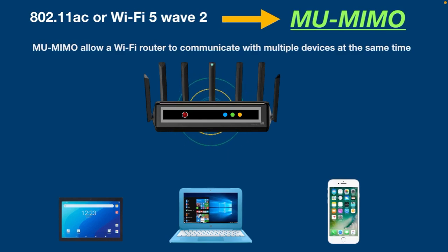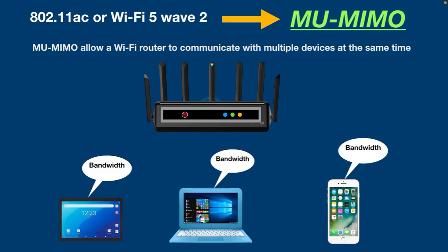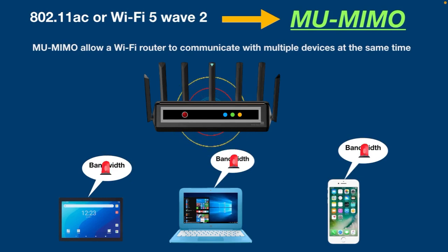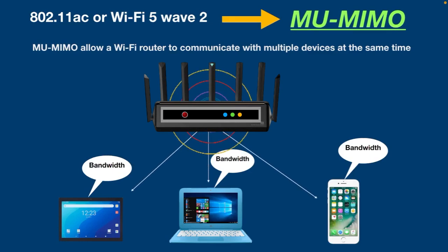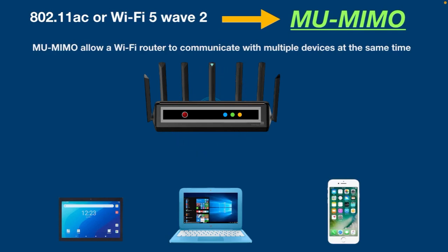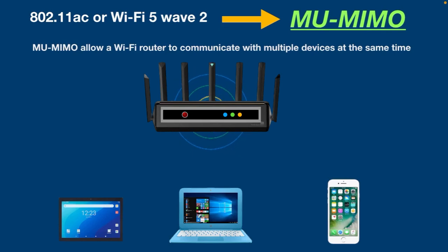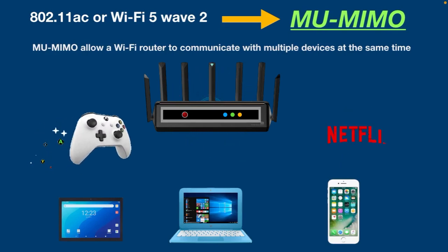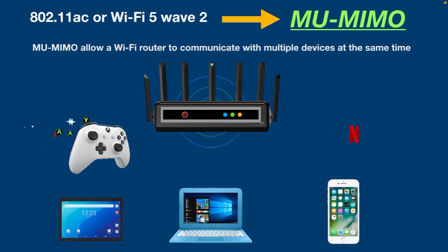Multi-User MIMO technology works with advanced routers that resolve the most important issue of bandwidth. What the router does is divide the available network bandwidth and push it equally to the connected devices. For example, if you have multiple devices at home all struggling for bandwidth simultaneously, the router breaks up the bandwidth and sends it to each device. By using Multi-User MIMO, you would see a significant change in network performance and speed, particularly if you are working with heavy applications that need more bandwidth, such as playing games or watching movies on Netflix.